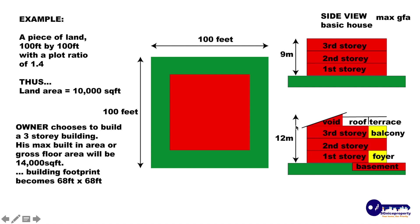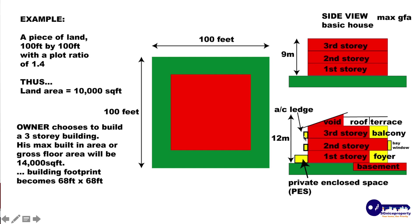Considering that the height limit of a building may be, for example, 12 meters, that would mean he can actually build a third storey with double volume or a void area, and he can build a roof terrace. So this roof terrace, this balcony, and this foyer will not be included in his GFA at all. What he also can do is build an aircon ledge, a private enclosed space, as well as a bay window. This is how buildings look so much bigger and more beautiful compared to ordinary ones.